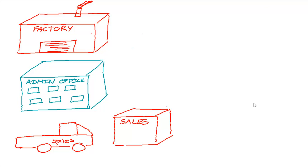When dealing with a manufacturing entity, it is important to distinguish that we have basically three different departments: we've got our factory, where our product is going to be made; our admin office, where all our admin staff sits — your IT staff, your accountants, your secretaries; and finally our selling and distribution department, where we sell our product and distribute it to our customers.